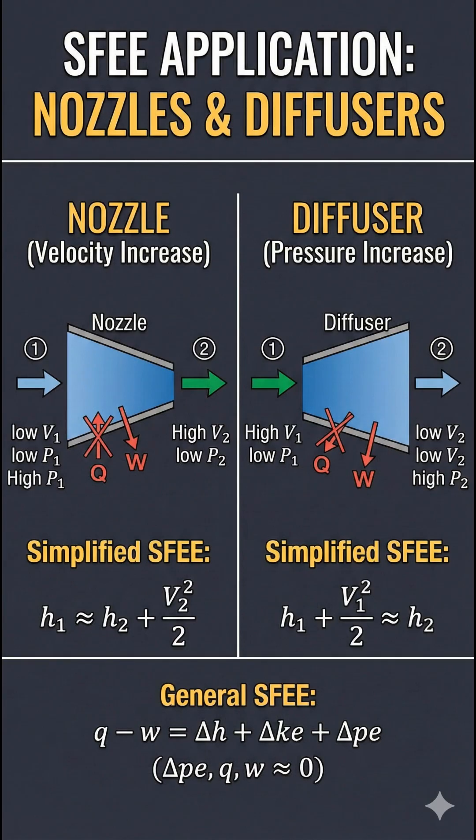Nozzles and Diffusers. This image focuses on nozzles, which increase fluid velocity, and diffusers, which decrease it. For these devices, work and heat transfer are typically negligible, and the primary energy transformation is between enthalpy and kinetic energy.